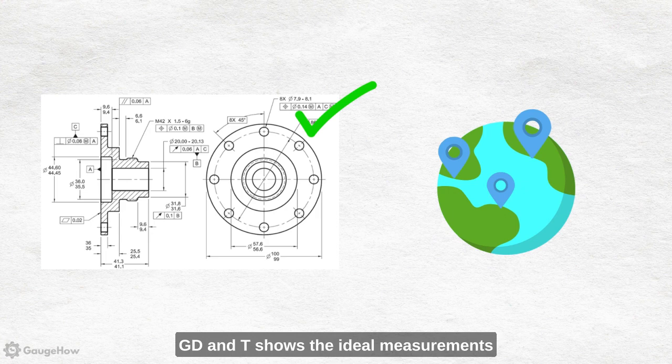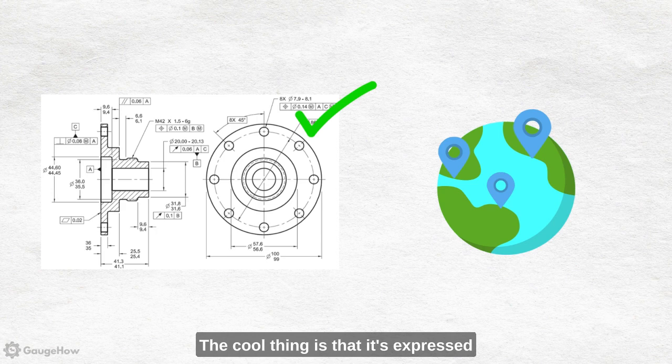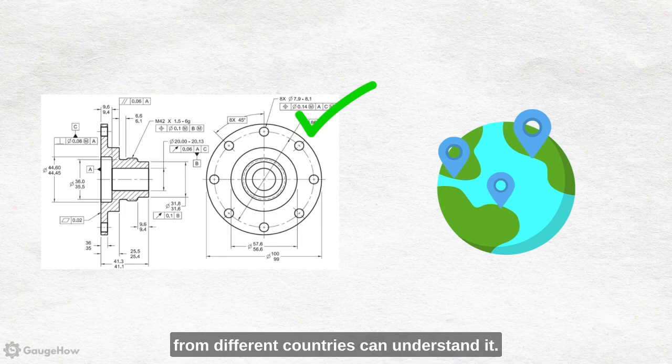GD&T shows the ideal measurements and allowed variations for a part. The cool thing is that it's expressed using drawings, symbols and numbers so people from different countries can understand it.